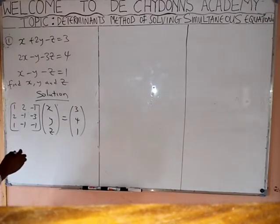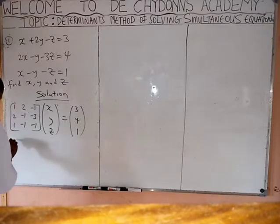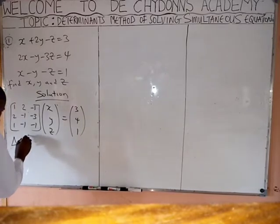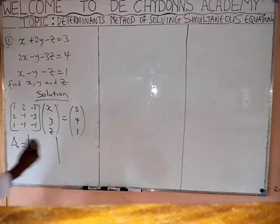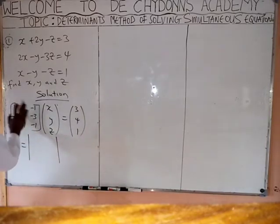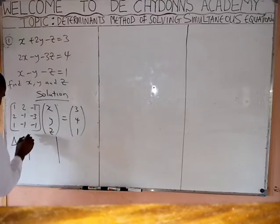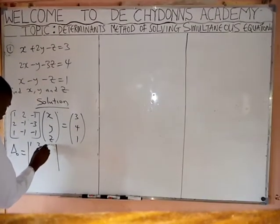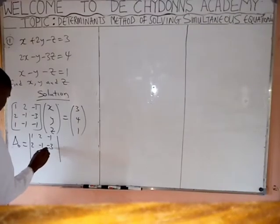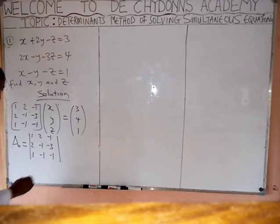What you now do is say delta 0. Put double bar lines — that means you are looking for the determinant. Carry everything and put it here: 1, 2, minus 1; 2, minus 1, minus 3; 1, minus 1, minus 1. Now, get the determinant.